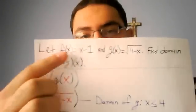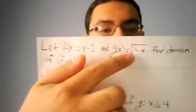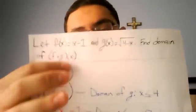f of x equals x minus 1 and g of x equals the square root of 4 minus x. Now we have to find the domain of f of g of x.